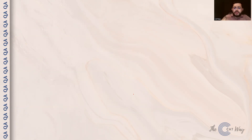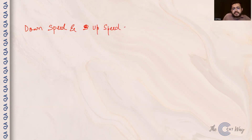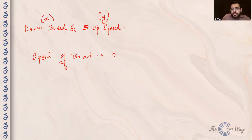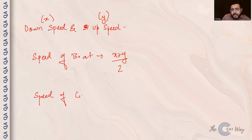One more thing to note: if you have been given both the downstream speed and upstream speed — let's say downstream speed is X and upstream speed is Y — then speed of boat equals (X + Y) / 2, and speed of current equals (X - Y) / 2.